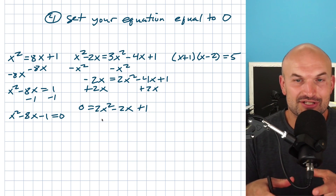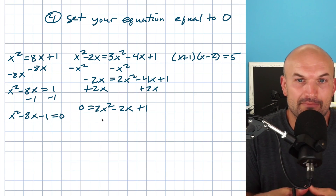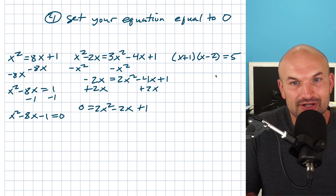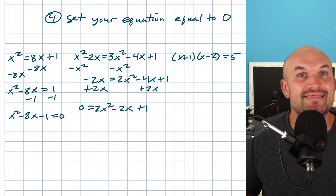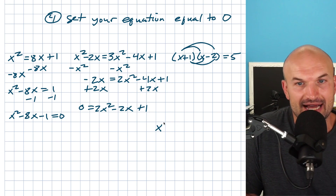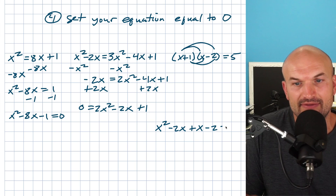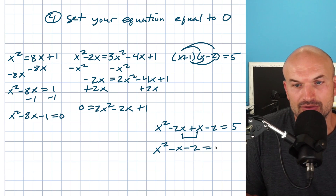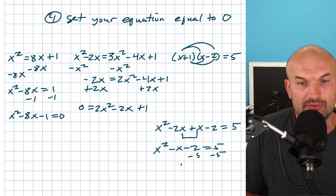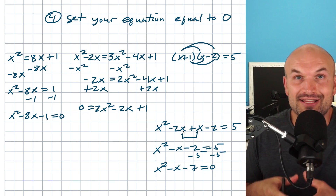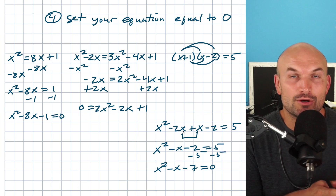In this last example, students often make the mistake of immediately setting both factors equal to five — but there is no 'five product property.' When you have a product equal to five, you need to expand and get everything to the same side. Expanding using FOIL: x times x is x squared, x times negative 2 is negative 2x, 1 times x is positive x, and 1 times negative 2 is negative 2, all equaling 5. Combining middle terms gives x squared minus x minus 2 equals 5. Subtracting 5 from both sides gives x squared minus x minus 7 equals zero — now check if it's factorable or use the quadratic formula.